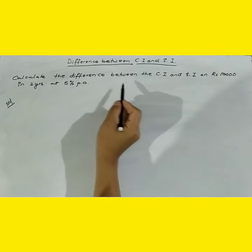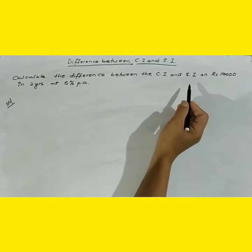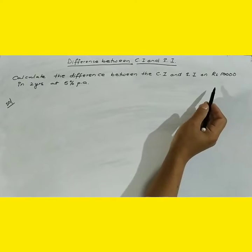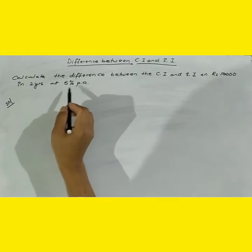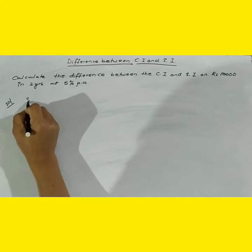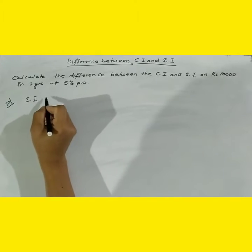So it says calculate the difference between compound interest and simple interest on rupees 10,000 for 2 years at 5%. So let's start. Let's calculate the simple interest first.